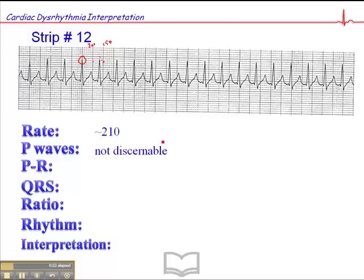P waves are not discernible. You'll notice there are little glitches here — don't get sucked in by the glitch. What's important is this is a resting adult with a heart rate of 210. This is not normal. This cannot possibly be a sinus tachycardia, because adults don't mount a sinus tachycardia greater than 160 at rest. So this has to be some kind of abnormal dysrhythmia.